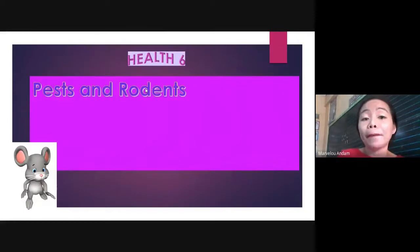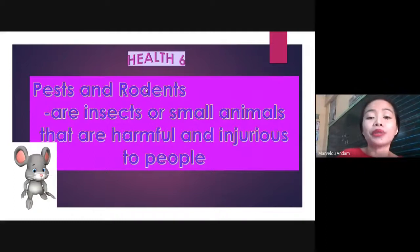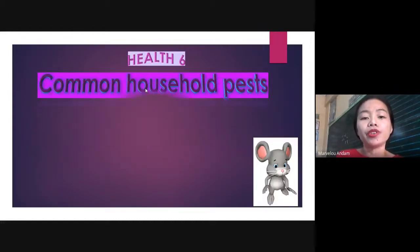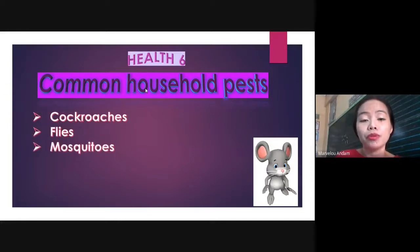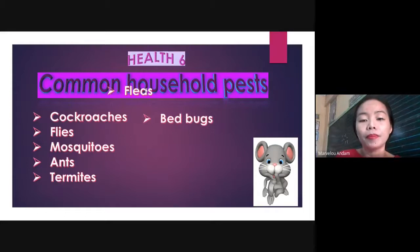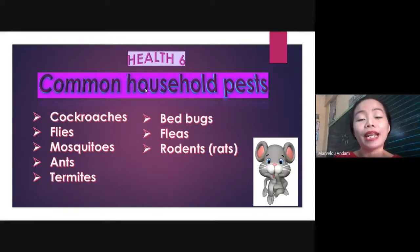So have you encountered these creatures before? Yes, I know you did. So what are pests and rodents? Pests and rodents are insects or small animals that are harmful and injurious to people. These are the common household pests: cockroaches, flies, mosquitoes, ants, termites, bedbugs, fleas, and rodents or rats.